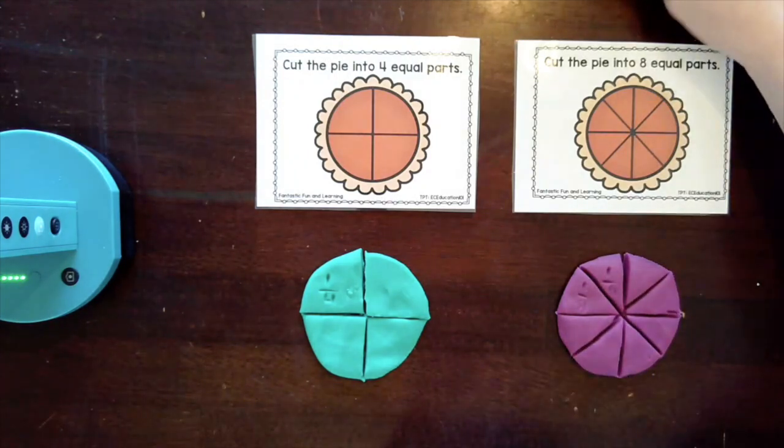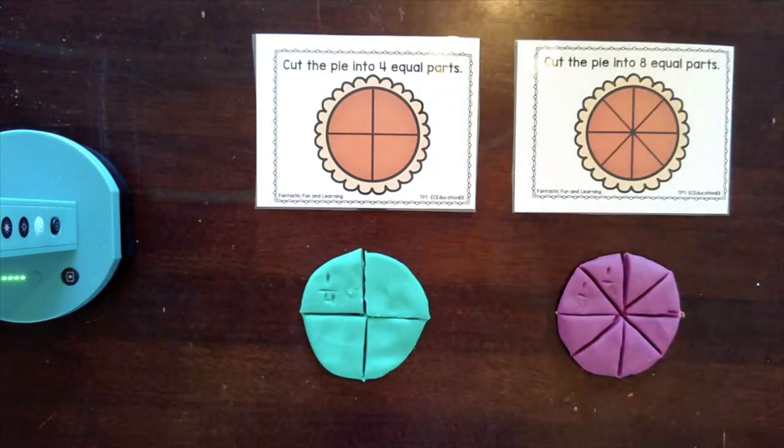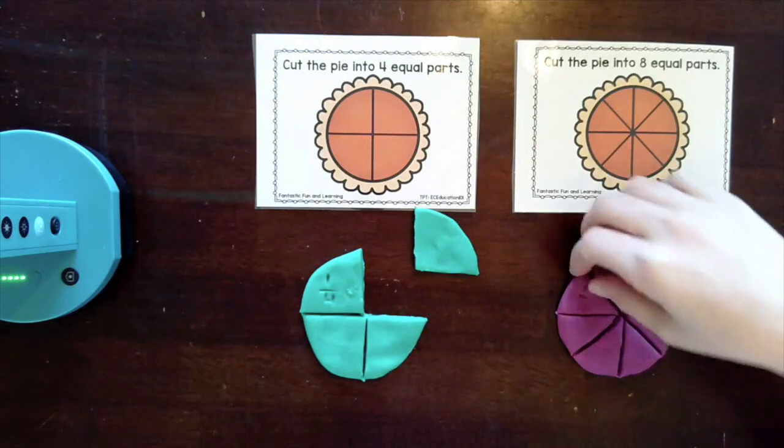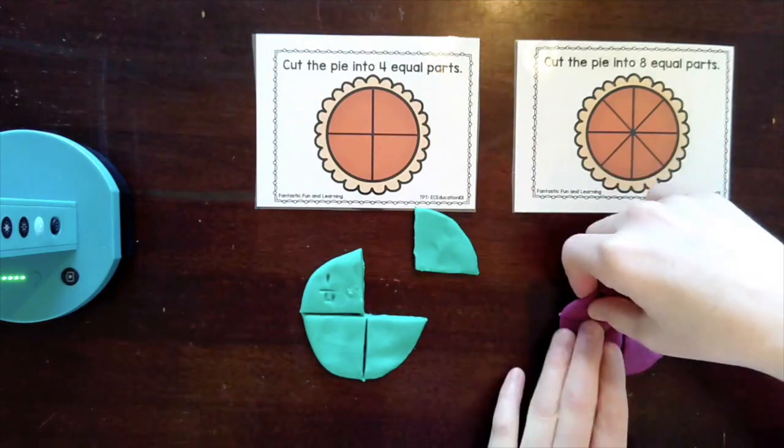I want to show you something cool. So if I take this, this is one quarter of my whole. This is two eighths of my whole.